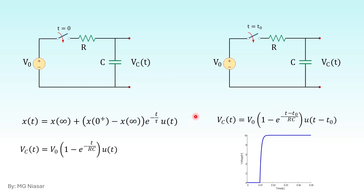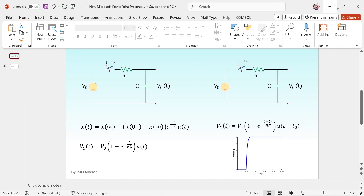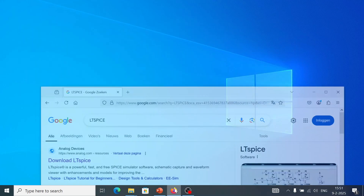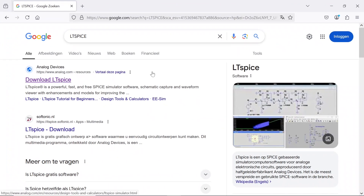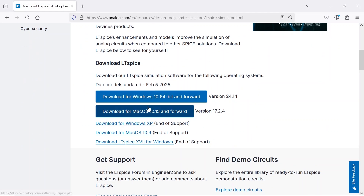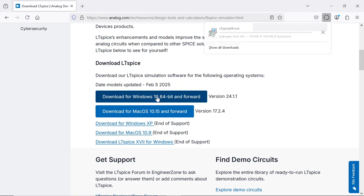Now we know the analytical solution of this circuit. We are going to implement it in LTSPICE and check whether our LTSPICE simulation matches our analytical calculation. First we need to download and install LTSPICE. You go to Google — I put the link in the description — search for LTSPICE, Analog Devices, download LTSPICE. Depending on your system, you download the software.